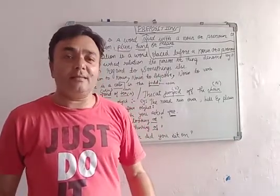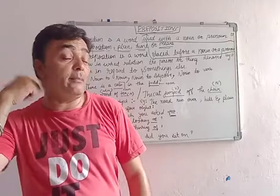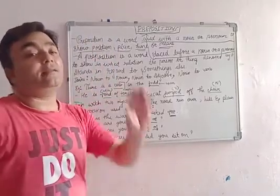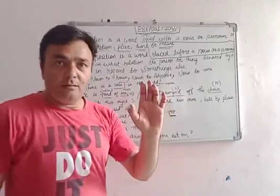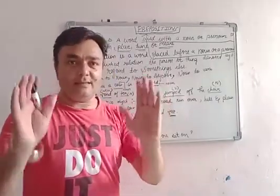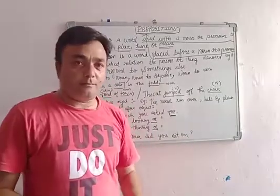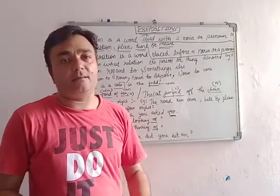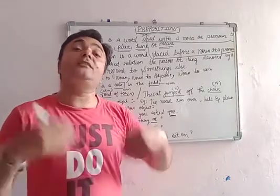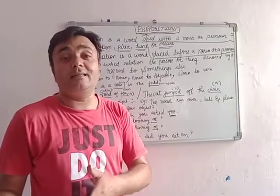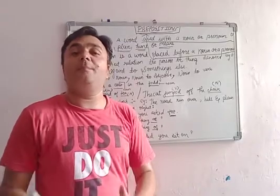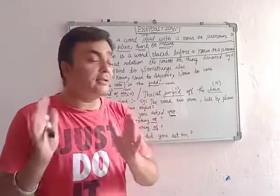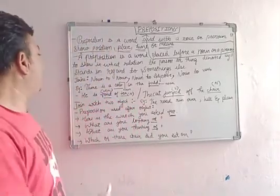That something else might be a place, a thing, a noun, or a pronoun — whatever it may be. It gives a particular connection. For example, if you say 'good boy,' you are using an adjective. But if he or she is doing something, you need a preposition. And if two sentences are there, we use conjunction.